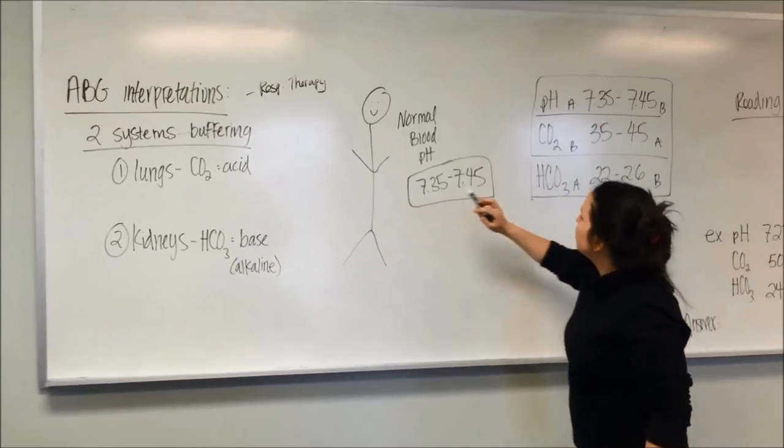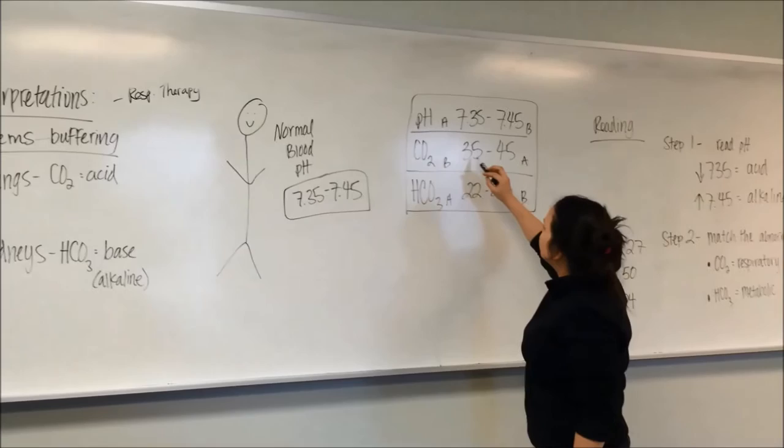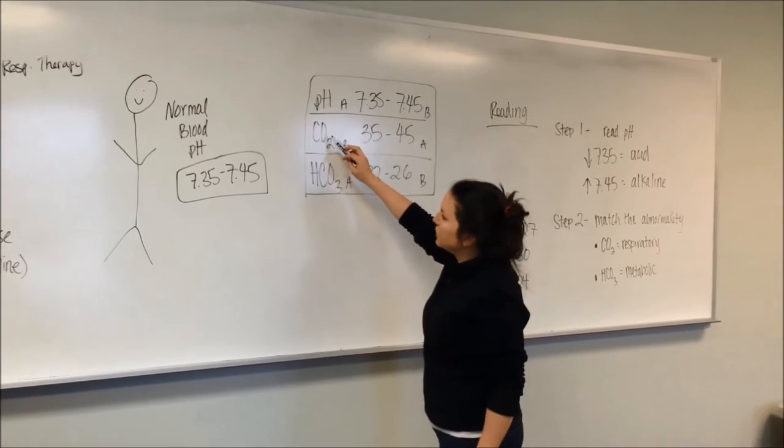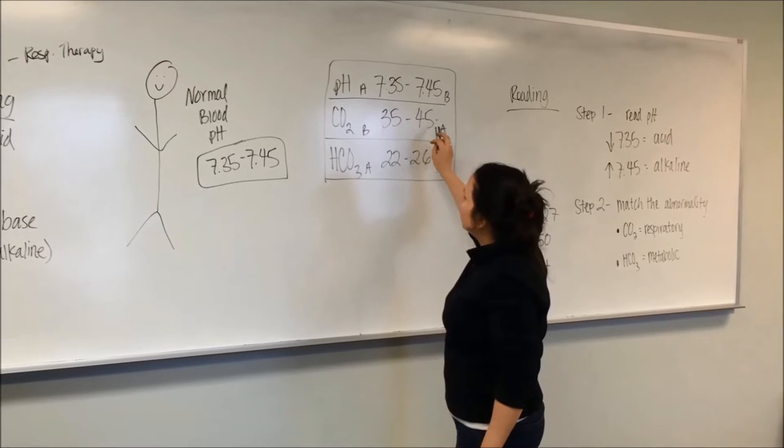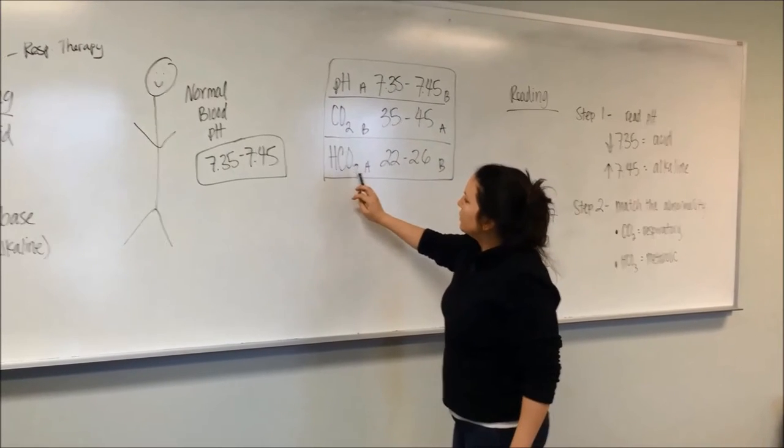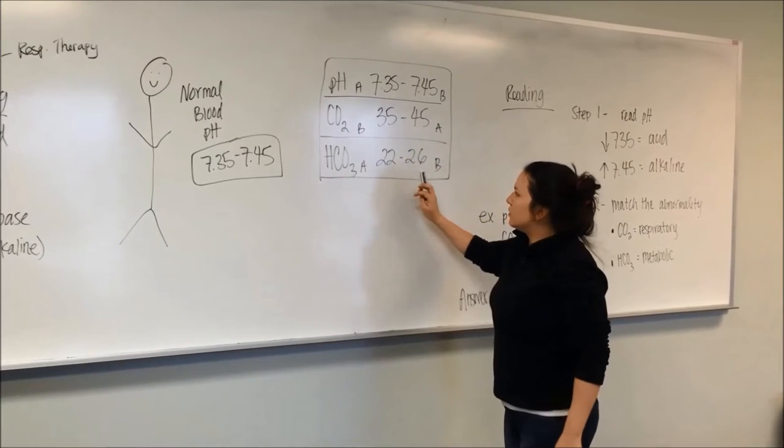The lungs have their own system. It's the CO2, and they have the reading of 35 to 45. The HCO3 have their own system. It's 22 to 26.